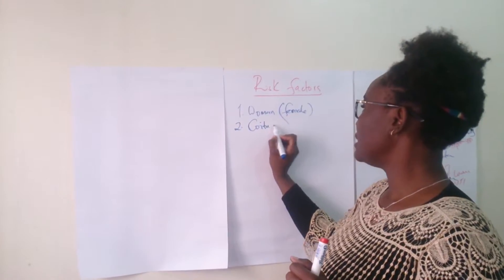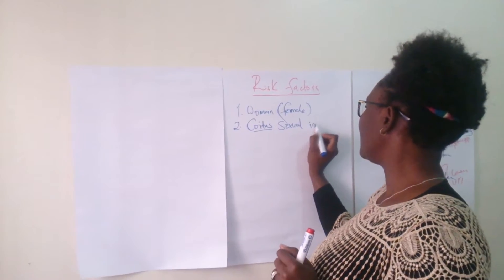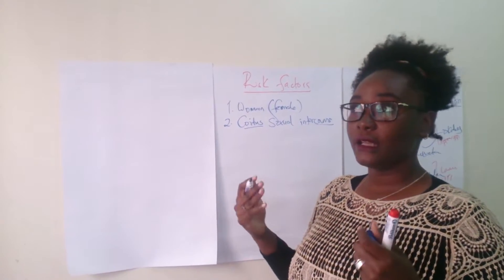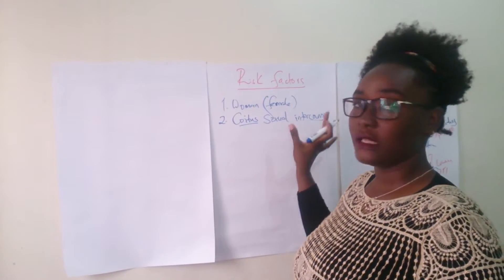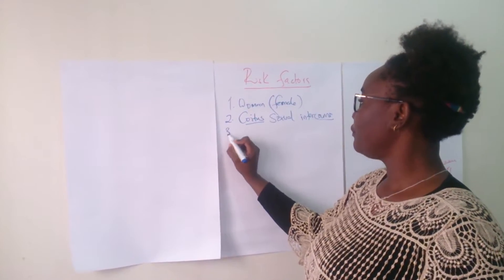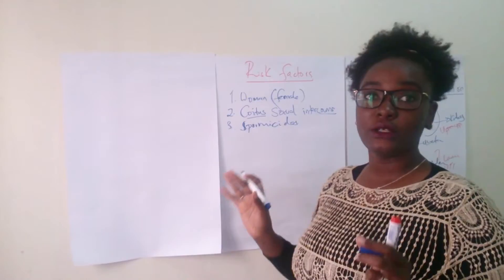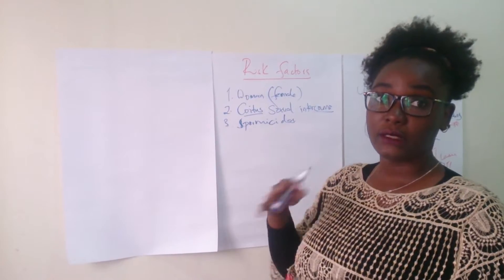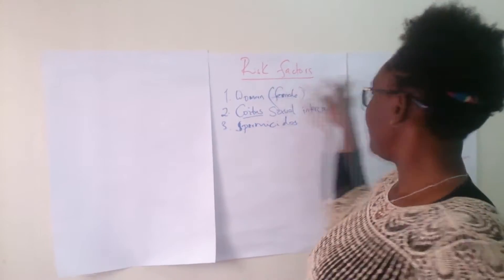Risk factor two: coitus — or to put it simply, sexual intercourse. It has been implicated as a risk factor for getting UTI, especially for the female gender. Risk factor three: use of spermicide. For people who use spermicide as a contraceptive, the use of a diaphragm plus spermicide has been implicated as a risk factor for UTI.